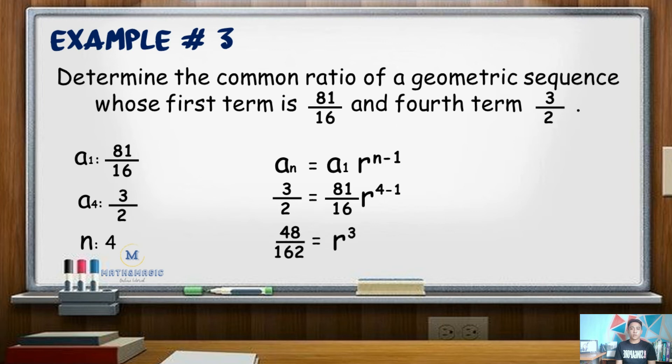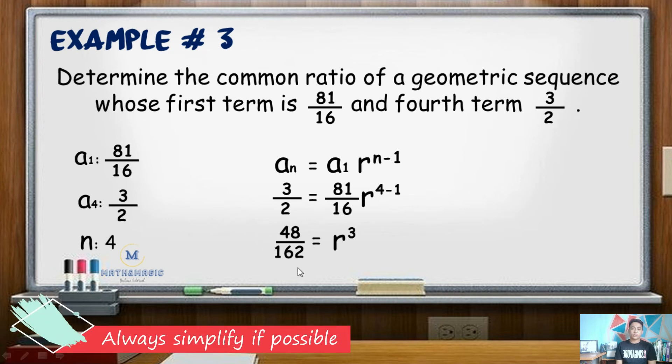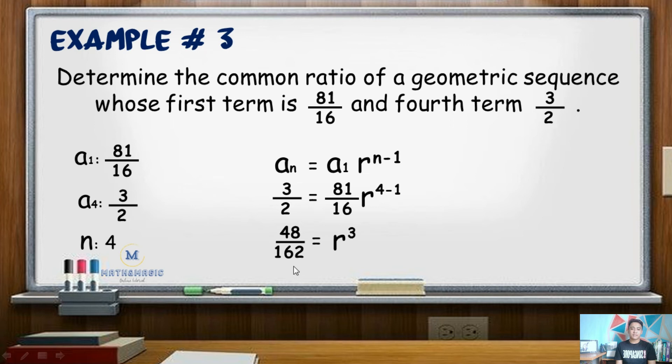By cross-multiplying 81 over 16 to 3 over 2, we now have 48 over 162 equals r cubed. Notice that the left side can still be simplified. 48 and 162 are both divisible by 6. Simplifying the value, we have 8 over 27. Getting the cube root of both sides, we have an r value of 2 thirds. Hence, the common ratio for this sequence is 2 thirds.